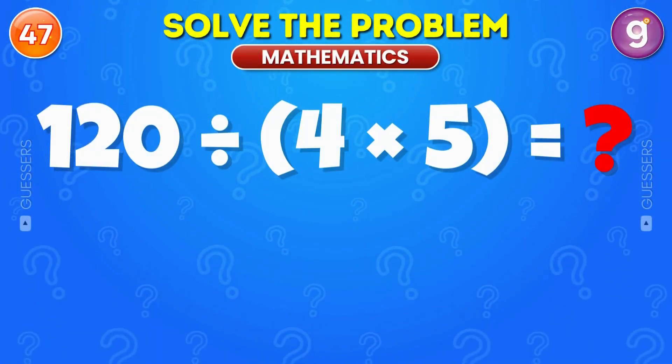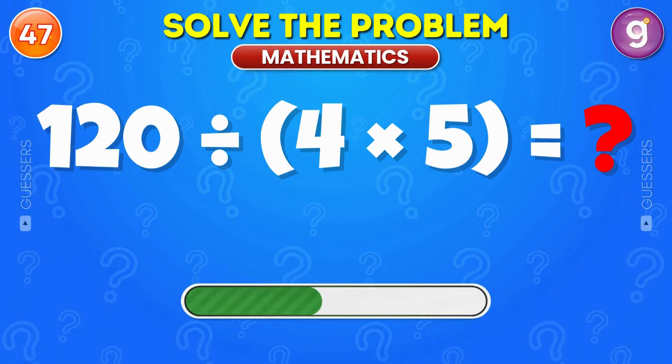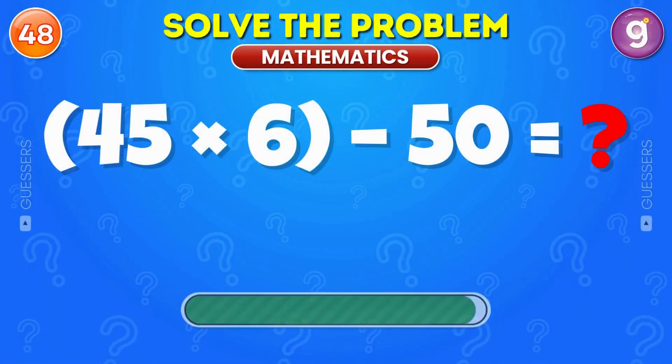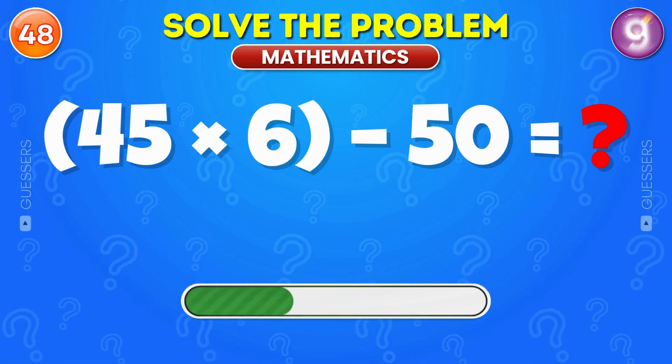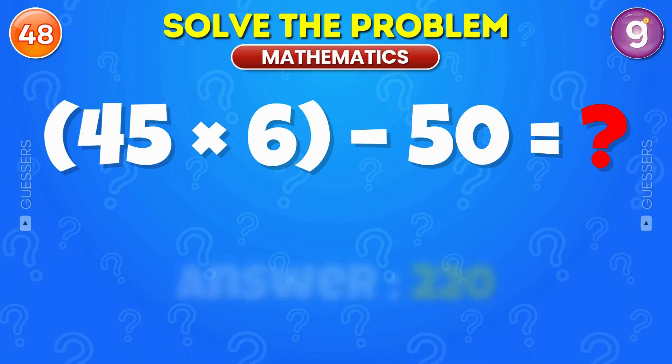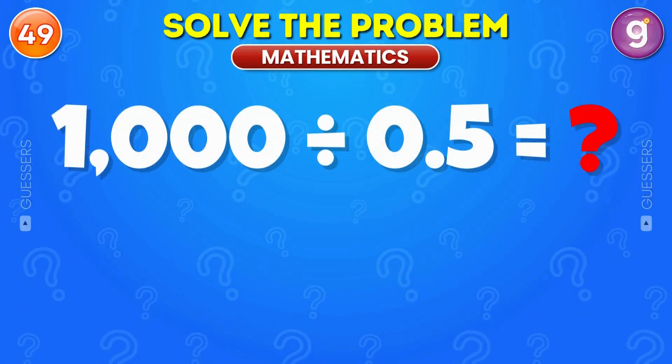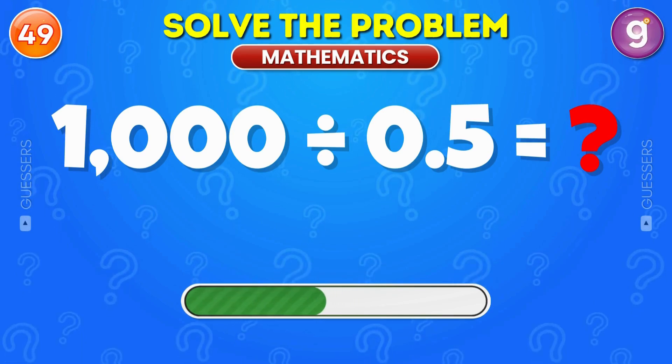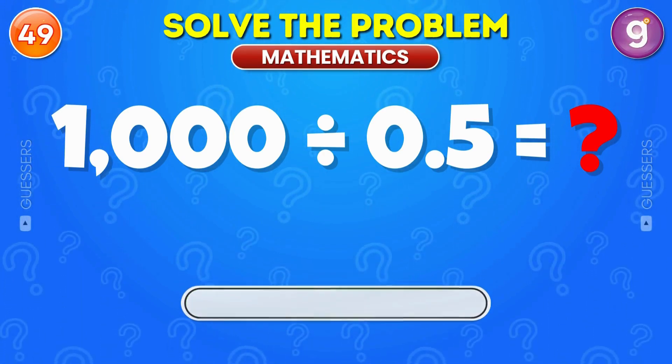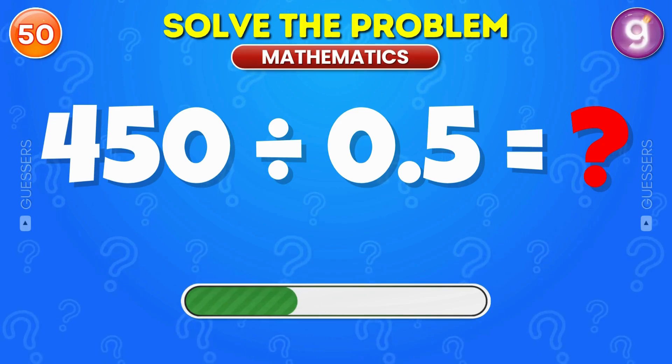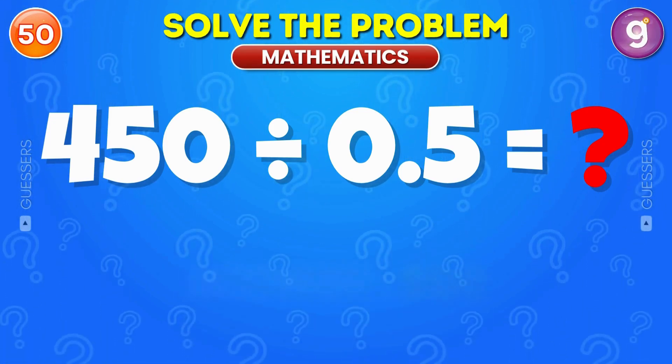What is 120 divided by 4 times 5? It's 150. What is 45 multiplied by 6 minus 50? It's 220. Divide 1000 by 0.5. The answer is 2000. What is 450 divided by 0.5? It's 900.